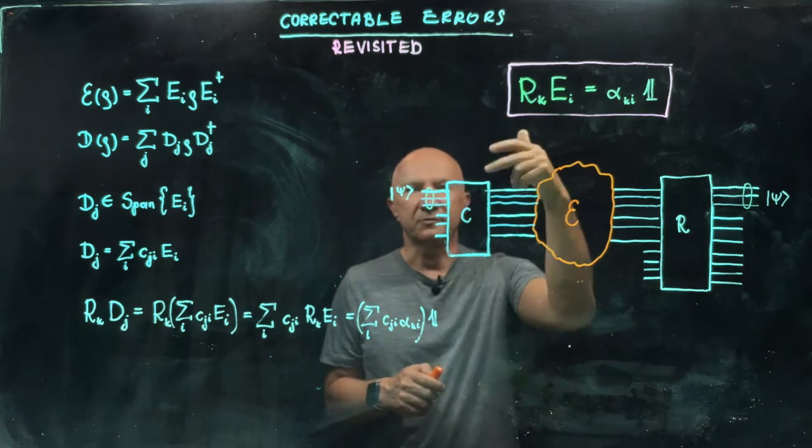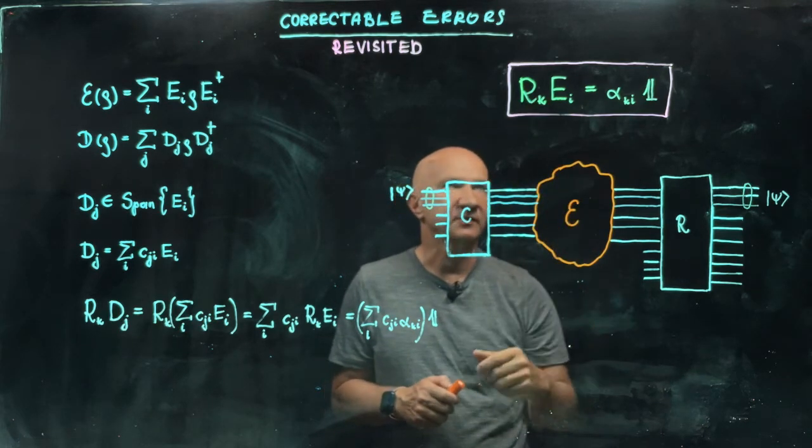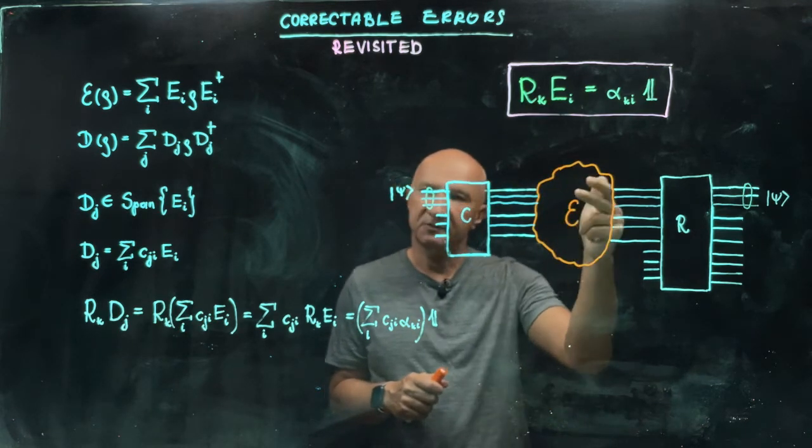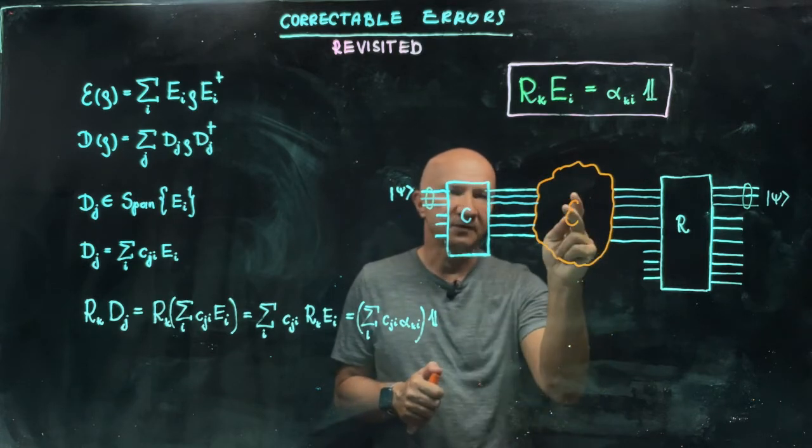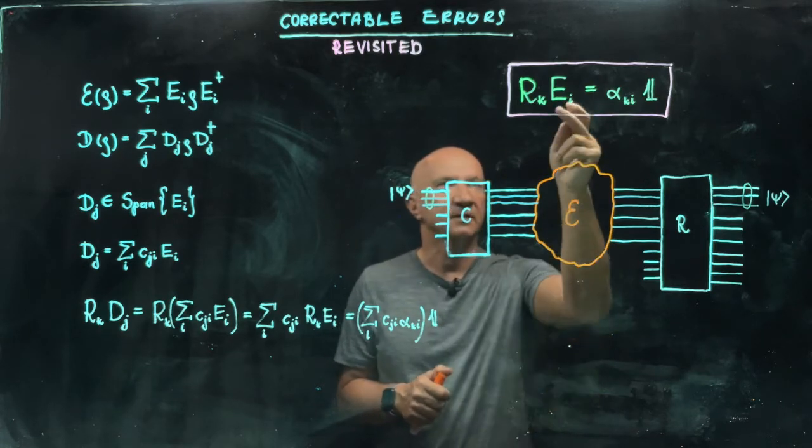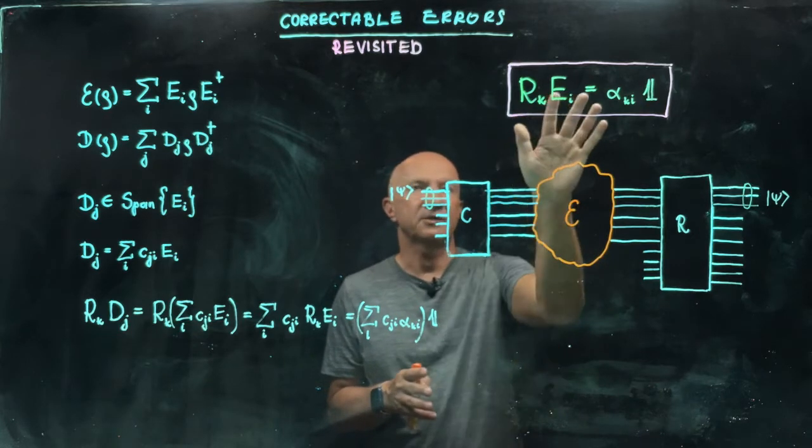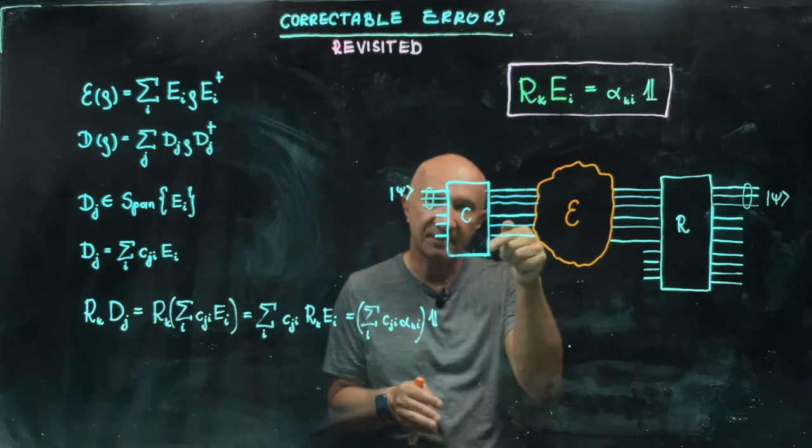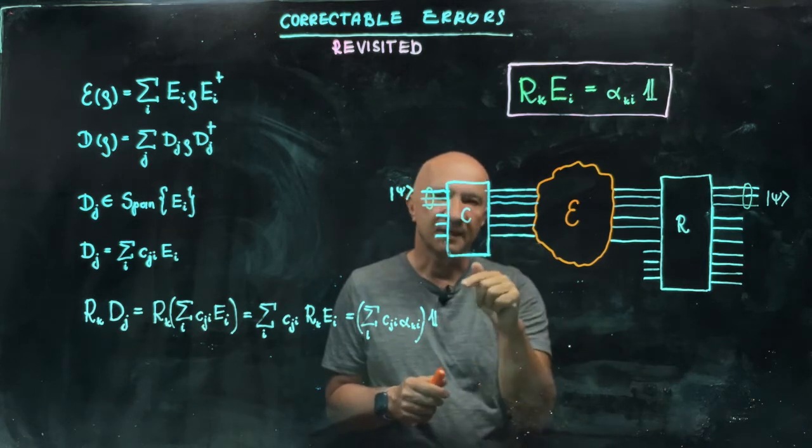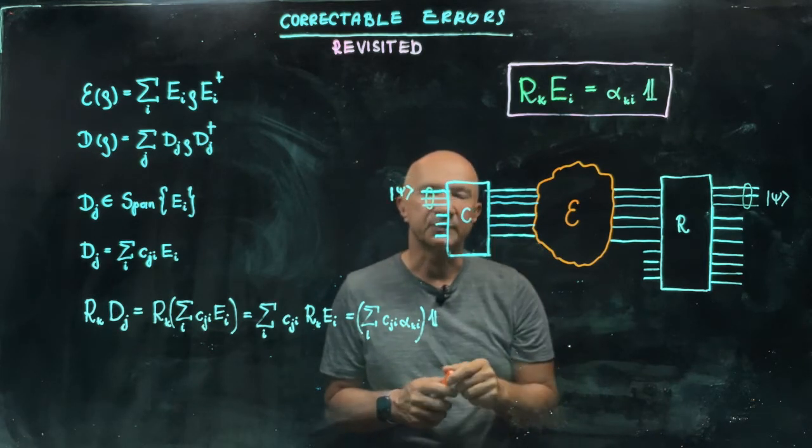So the Kraus operator is associated with the recovery channel and the errors or the Kraus operator is associated with this completely positive map EI. The recovery condition says that the product of the two has to be proportional to the identity, where the identity refers to the identity on the code space.